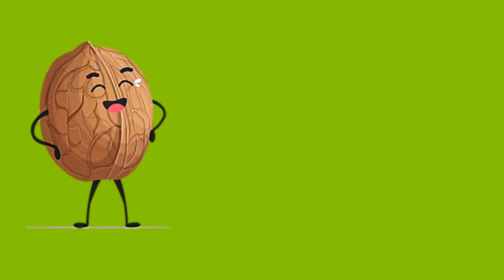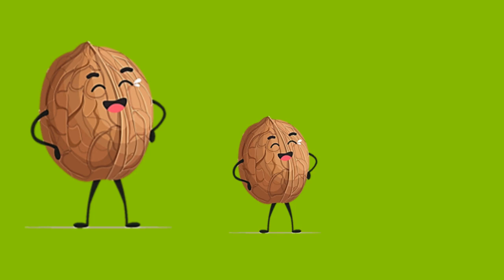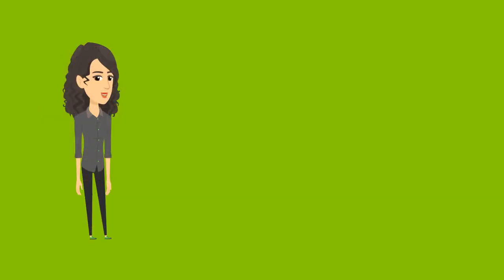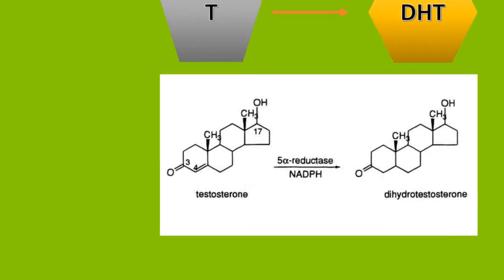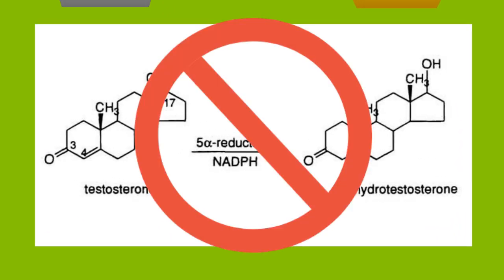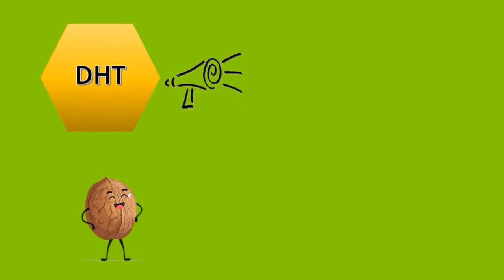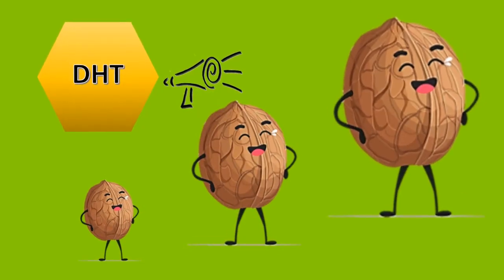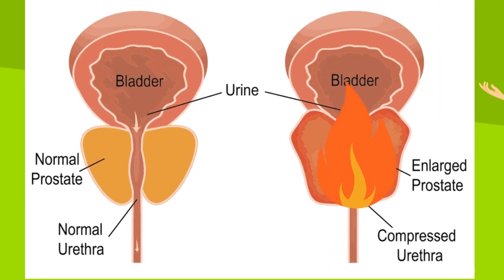Second, saw palmetto decreases abnormal growth of the prostate by inhibiting the signal that causes growth and inflammation. This is accomplished by inhibiting the conversion of dihydroxy-testosterone, DHT, from testosterone. This is a signaling hormone responsible for BPH development and progression in men. It also stimulates inflammation of the prostate.